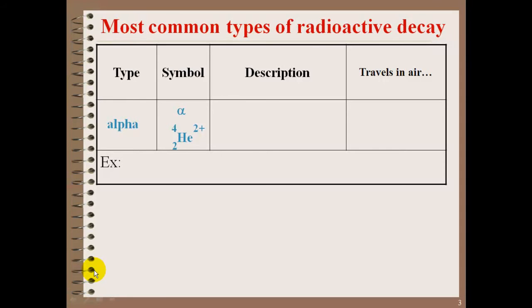Or you could use the helium nucleus. This is a helium nucleus with no electrons around it, therefore it has a plus two charge. An alpha particle has a mass of four and has two protons in it, so two neutrons and two protons. It's an energized helium nucleus. It travels in the air only a few centimeters and cannot penetrate human skin.